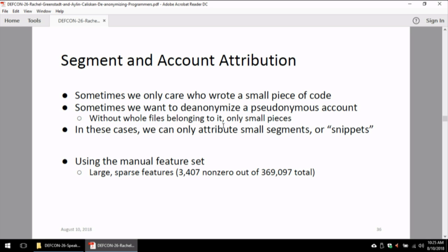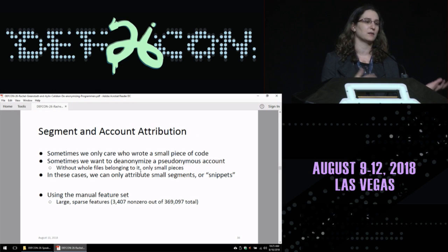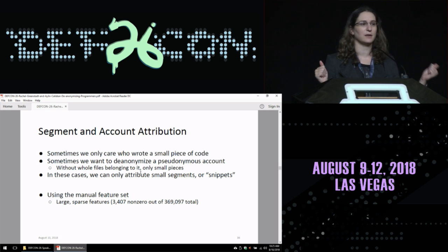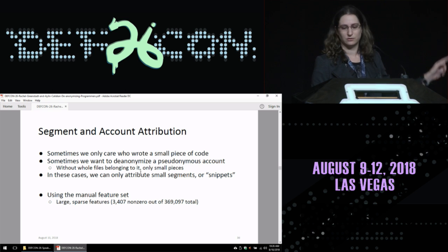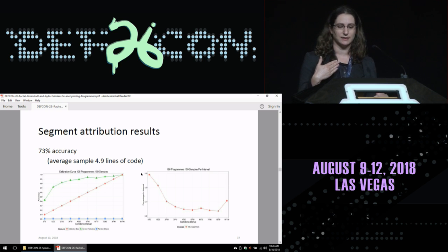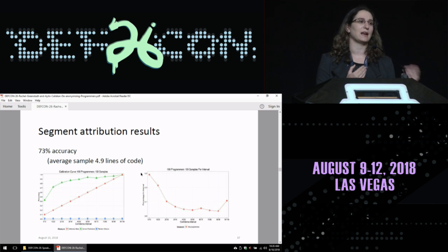In this case, we're only carrying maybe who wrote a small piece of code. Or we want to de-anonymize some pseudonymous account on GitHub who we have like several snippets or segments of code. We don't have these whole files nicely written. We're using the same feature set that we used before. We're trimming it down to about 3,400 features. These are very small segments and snippets. Sometimes we need more features for that. Ultimately when we were doing this, we get about 73% accuracy at identifying the author when we're talking about 100 programmers for a snippet of code that's about five lines long.